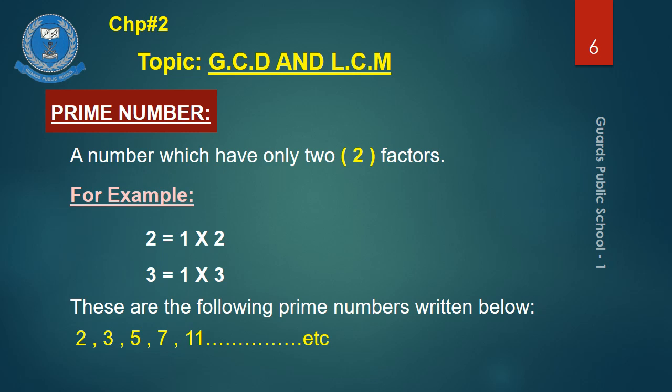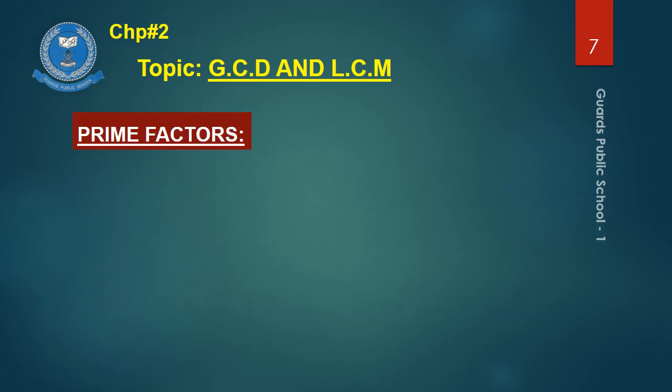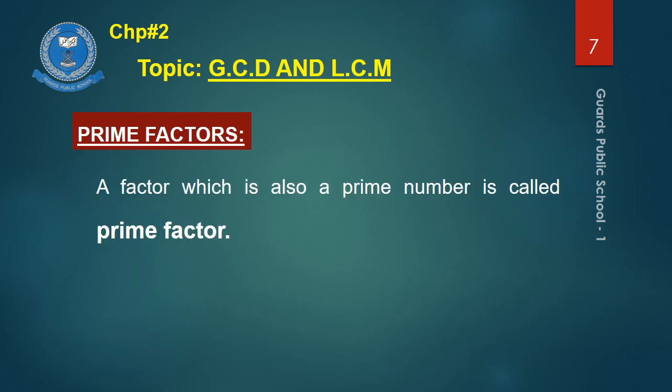What does that mean? A prime number can only be divided by two numbers: 1 and itself. Now, come to the topic of prime factors. After understanding prime numbers and factors, you can understand it very easily. A factor which is also a prime number is called a prime factor.